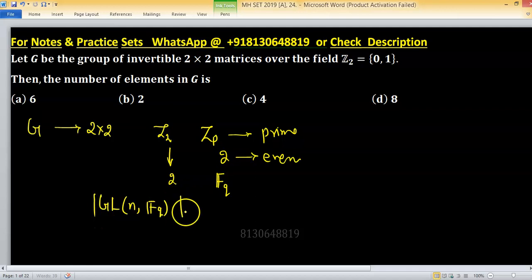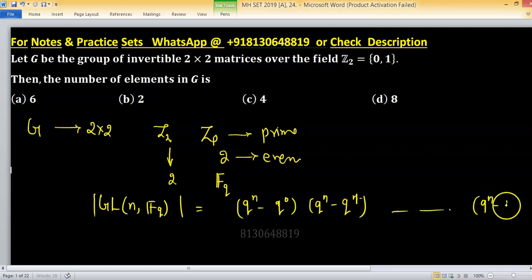So the order of this general linear group you can find easily: Q raise to the power n minus Q raise to the power 0, Q raise to the power n minus Q raise to the power 1, and so on Q raise to the power n minus Q raise to the power n minus 1. This is the general format.